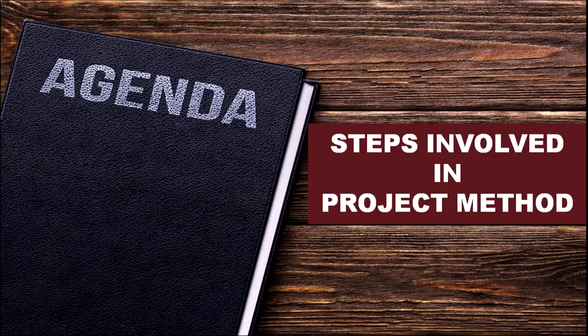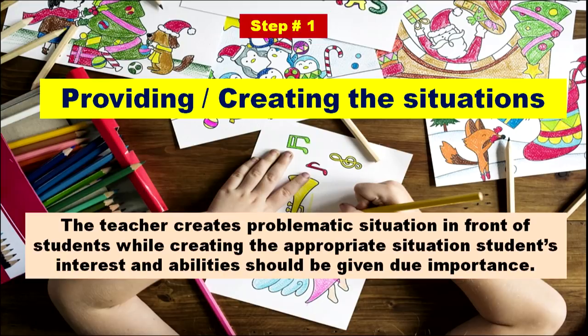You have to distribute each area to different groups according to the interest of the group members. Now, here are the steps involved in the project method. Step number one: providing or creating the situation. The teacher creates a problematic situation in front of students, and while creating the appropriate situation, students' interest and ability should be given due importance.